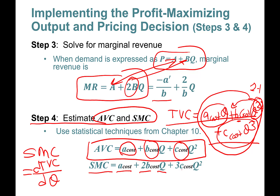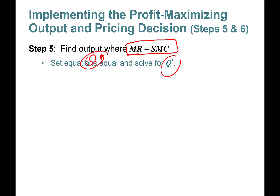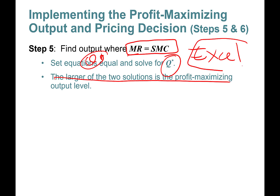Then we find the optimal level of output such that marginal revenue equals short-run marginal cost, and we solve for Q*. We take the larger of the two solutions. The formula looks quite complicated; however, we're going to do everything in Excel and you'll see it is super easy.